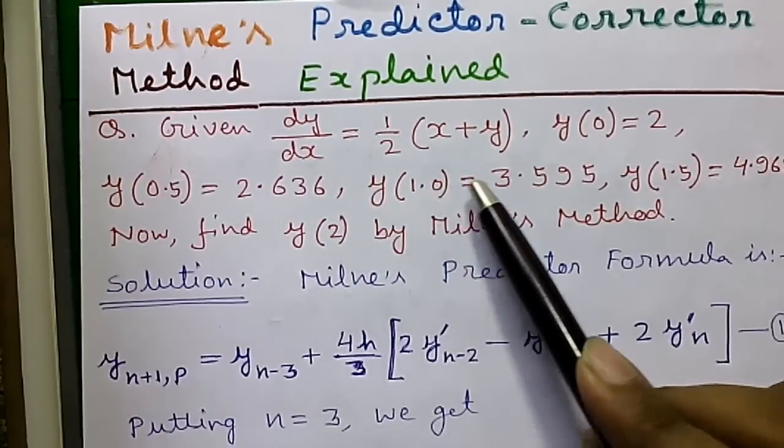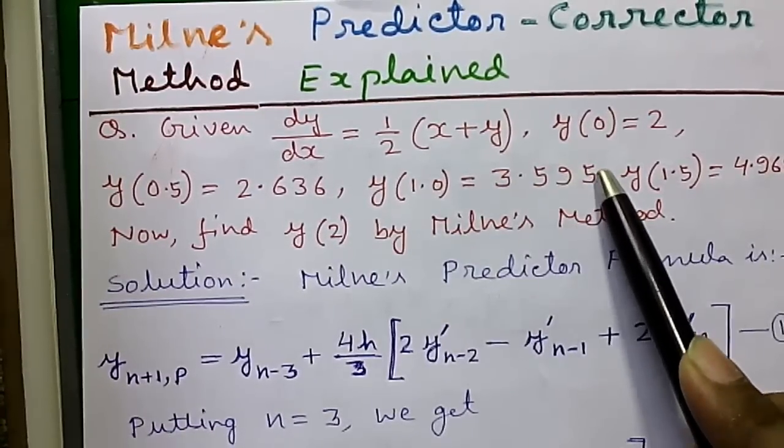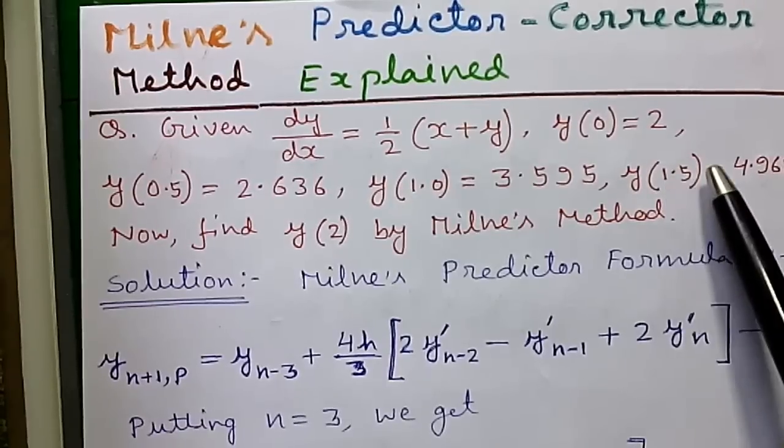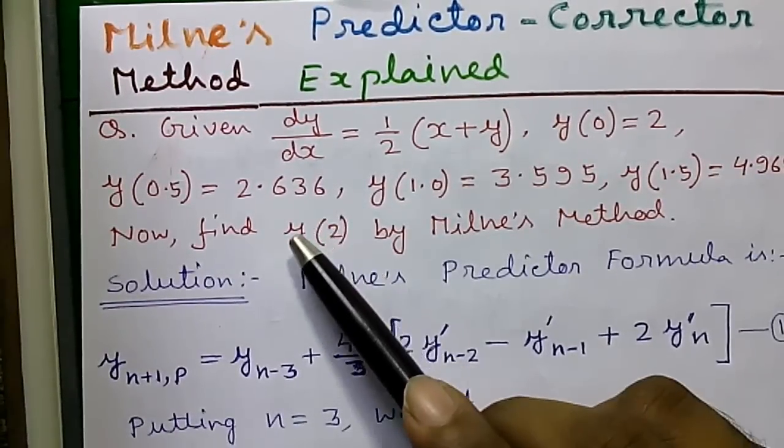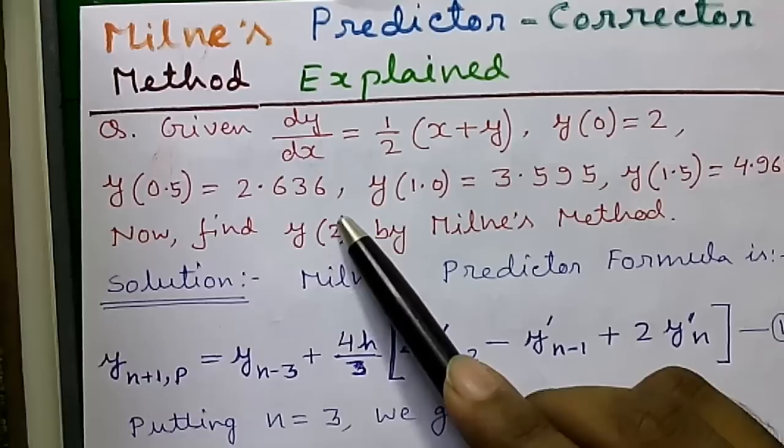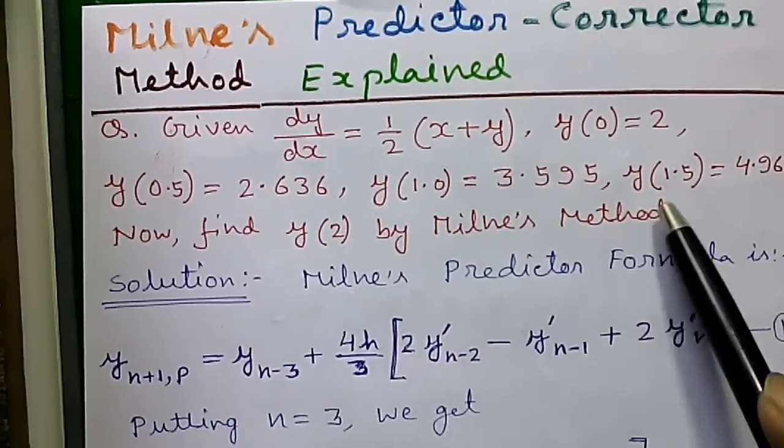y(1.0) equals 3.595 and y(1.5) equals 4.968. Now we have to find out what is the value for y(2) by Milne's method.